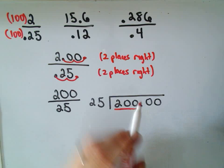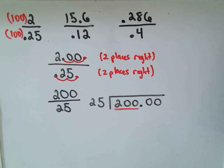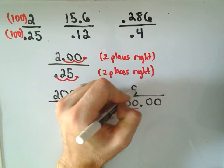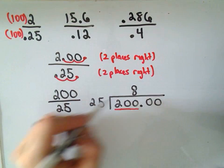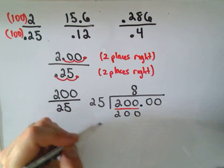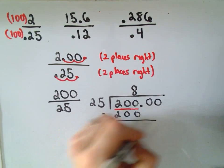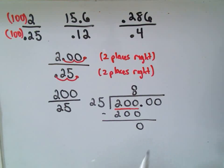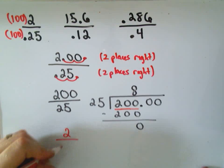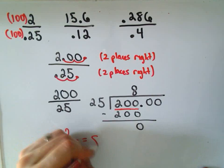25 will go into 200 eight times. You need to put the number on the rightmost digit. So 25 goes into 200 eight times. I put 8 above the very last digit. Then I take 8 times 25, which is simply 200, and that's going to leave us with a remainder of 0. So it says 25 will go into the number 200 eight times exactly. So 2 divided by 0.25 is simply equal to 8.